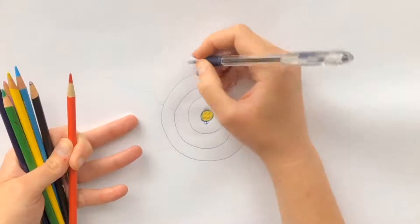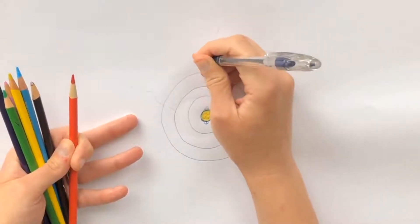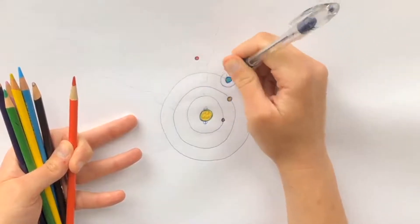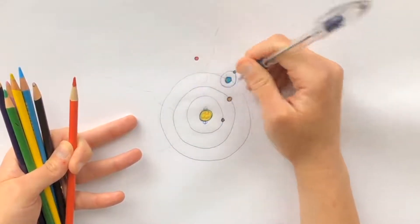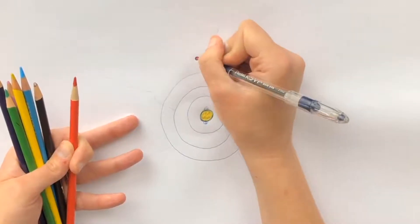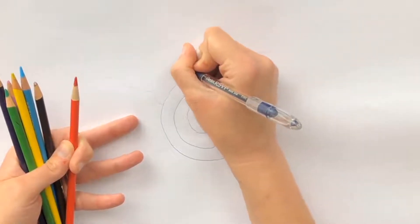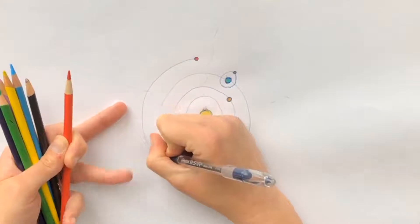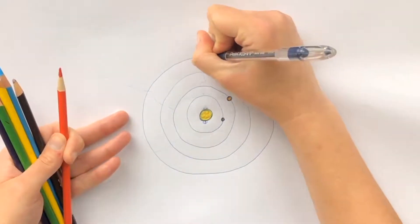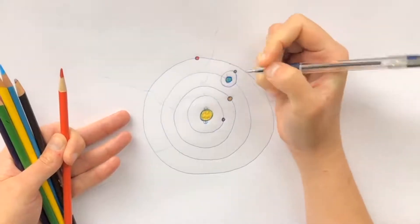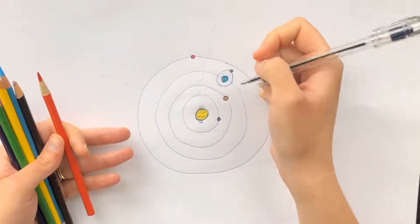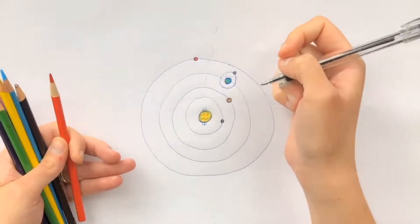And while it has a day that's about the same time as Earth's day, its year is a lot different from Earth's year. One orbit around the Sun, or a year for Mars, is actually 687 Earth days, so a lot longer than a year for us here on Earth.